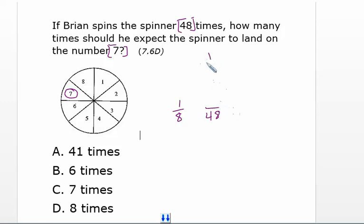Okay, so I have my total sections on the bottom, I have my seven at the top, I have my total spins here at the bottom, and I'm looking to see how many sevens will I see out of the 48 spins. So I just set up a proportion to get my answer.